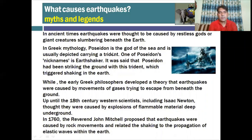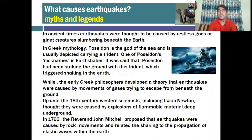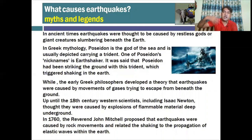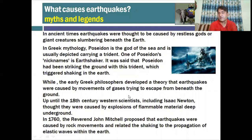In Greek mythology, Poseidon is the god of the sea and is usually depicted carrying a trident. One of Poseidon's nicknames is 'Earth Shaker.' You can see here this is the image of Poseidon — he has a device called a trident, which has three arrow-like prongs. It is said that Poseidon had been striking the ground with this trident, which triggered shaking in the Earth. So this was the myth that once he threw his trident onto the surface of the Earth, the Earth would start to shake or tremble.